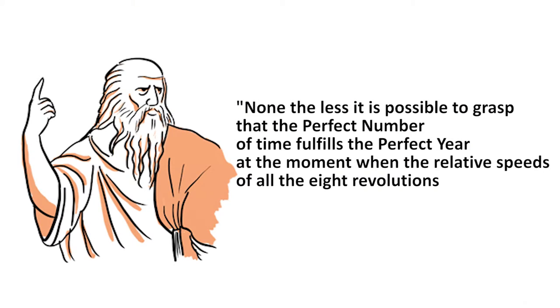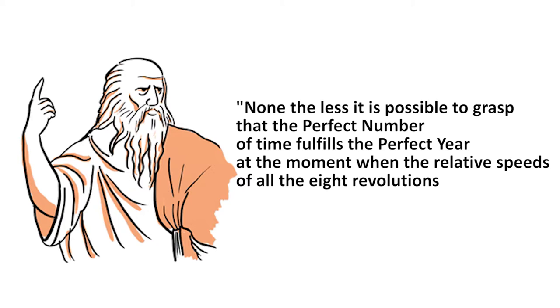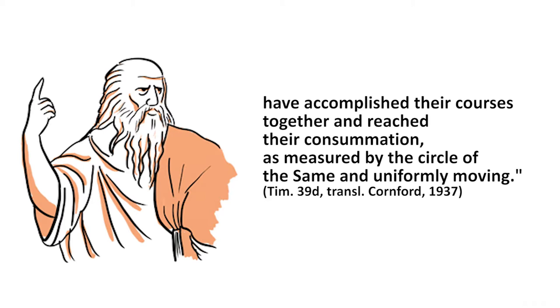It is also in the same text that we find the first genuine and undisputable discussion of the Great Year Doctrine. This discussion was to become the standard reference for world cycle theories until well into the European Renaissance. Thus, after having recalled that a month is measured by the return of the Moon and a year by that of the Sun, Plato explains — I quote: "Nonetheless, it is possible to grasp that the perfect number of time fulfills the perfect year at the moment when the relative speeds of all the eight revolutions have accomplished their courses together and reached their consummation, as measured by the circle of the same and uniformly moving." End of quote.